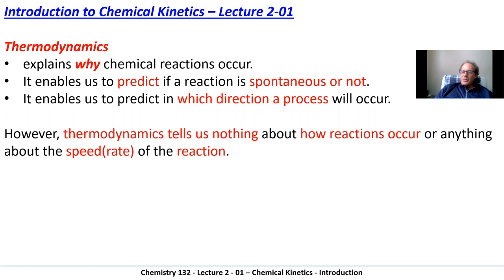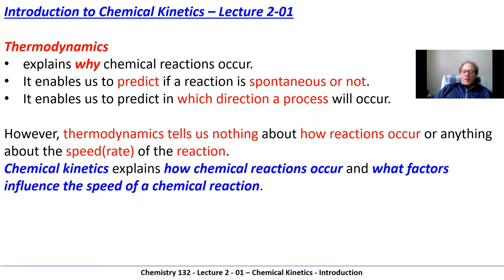However, thermodynamics doesn't tell us anything about how those reactions occur. It doesn't tell us whether there are steps in those chemical reactions, or whether the reaction goes really fast or really slow, and there's no simple way of determining that — you simply have to analyze the chemical reaction itself. Chemical kinetics, on the other hand, tells us these things. It tells us the factors involved in influencing the speed of the chemical reaction, and it's critical to designing and implementing a process for commercially producing chemicals.